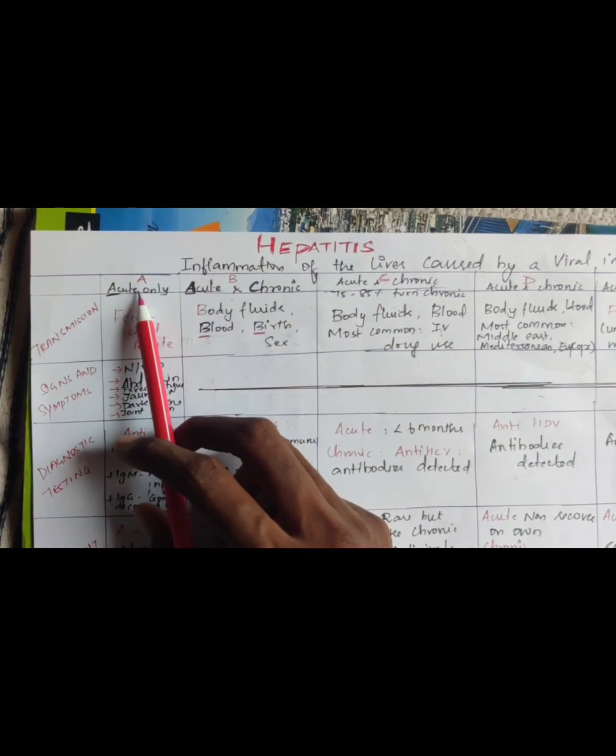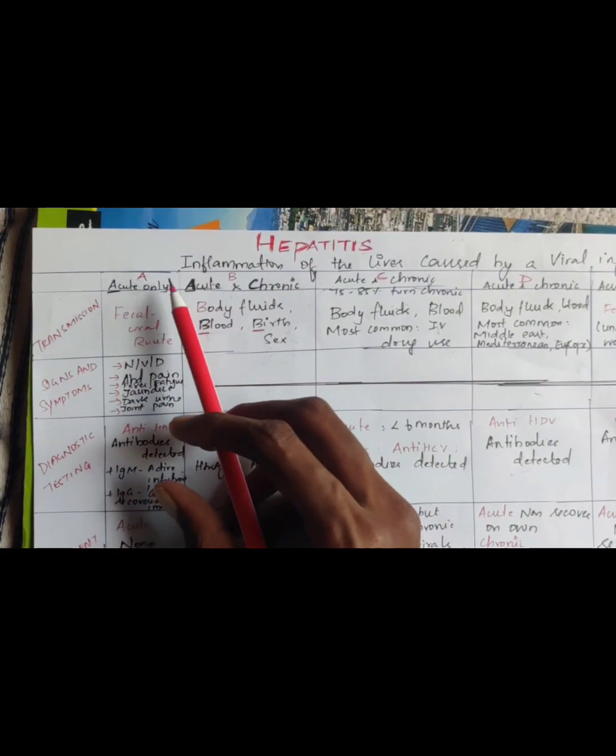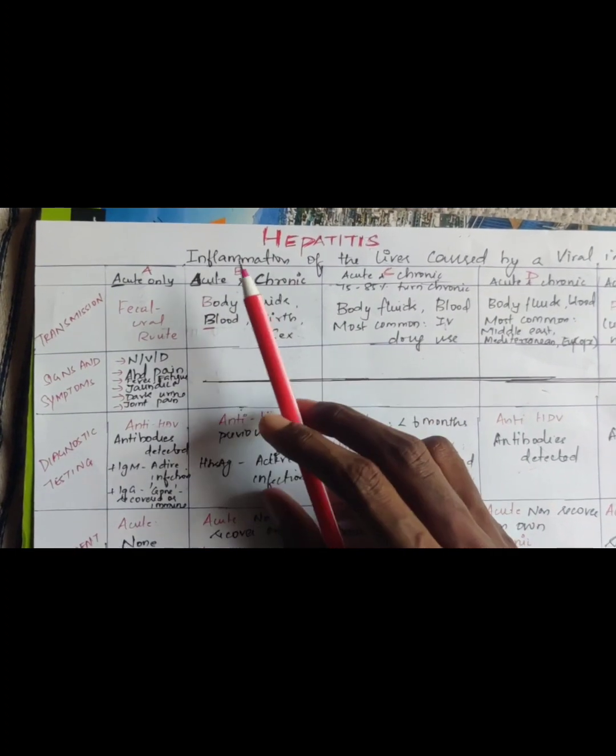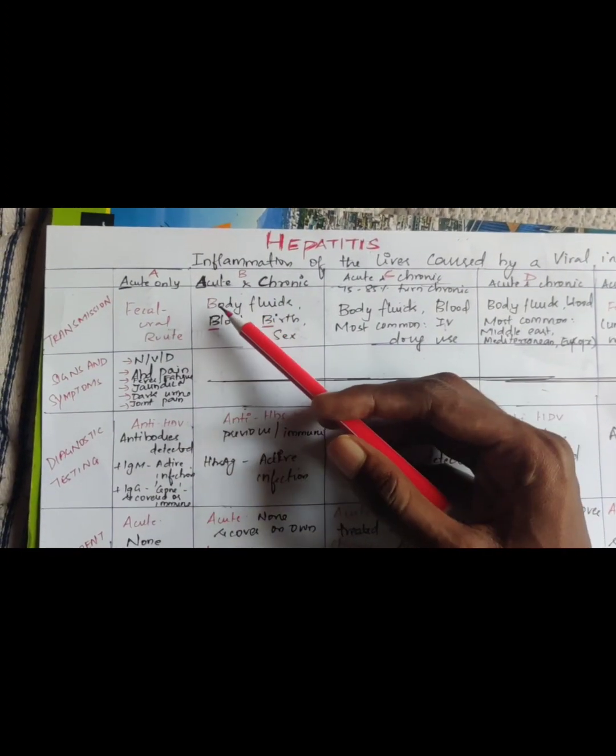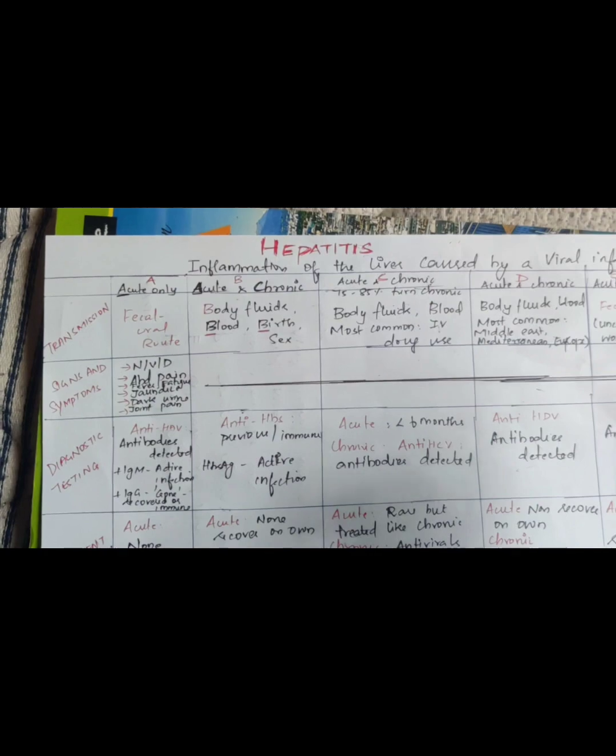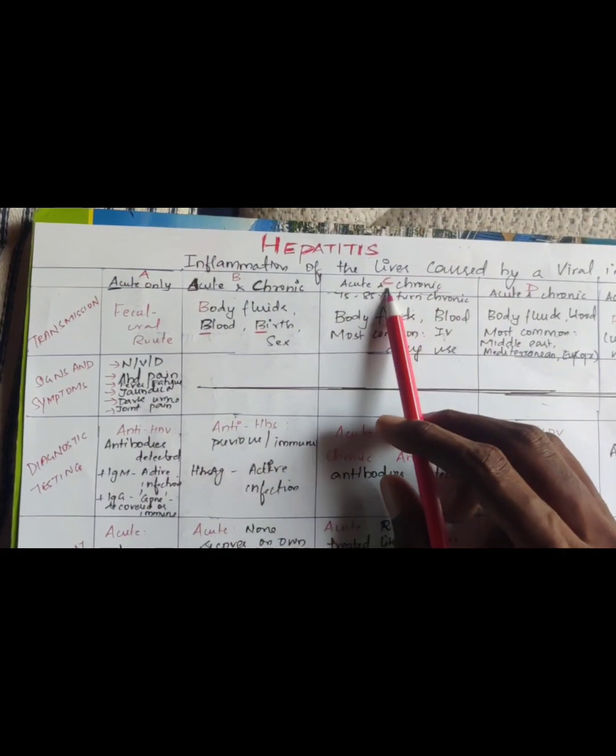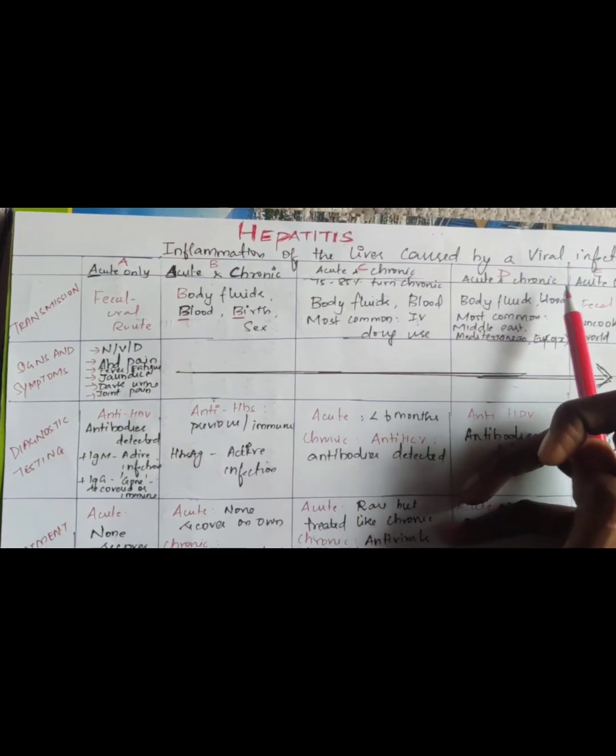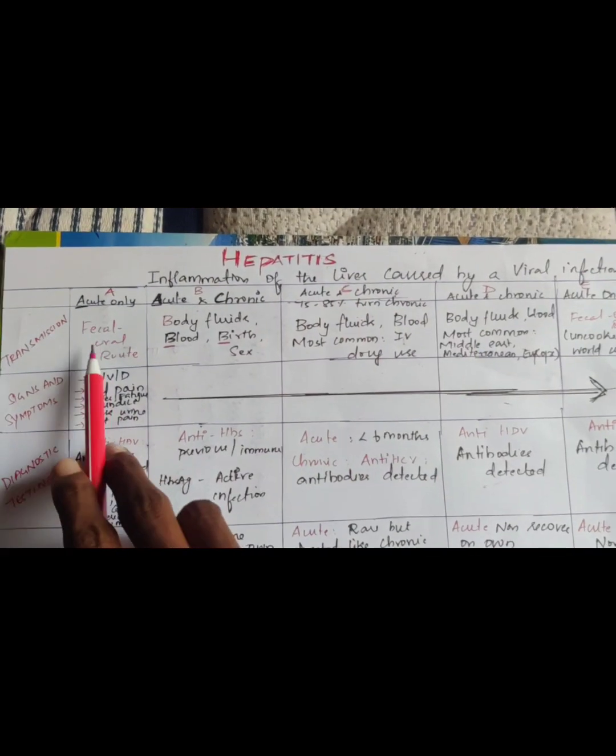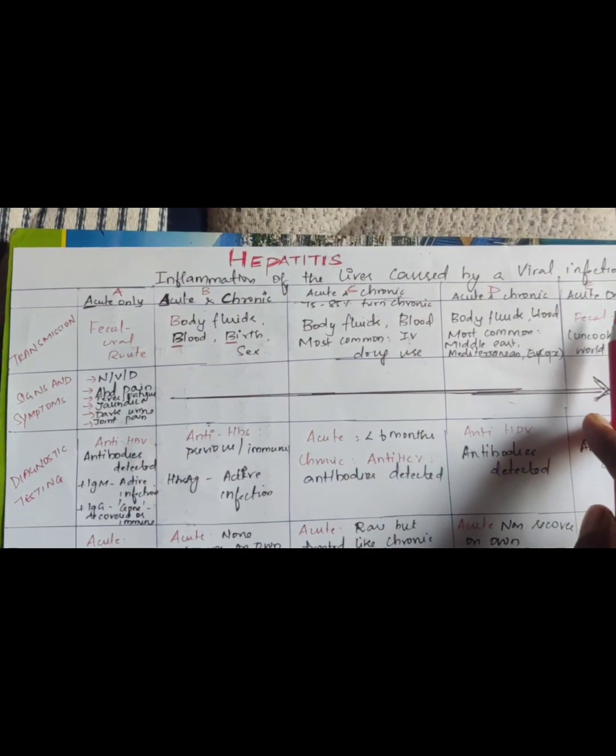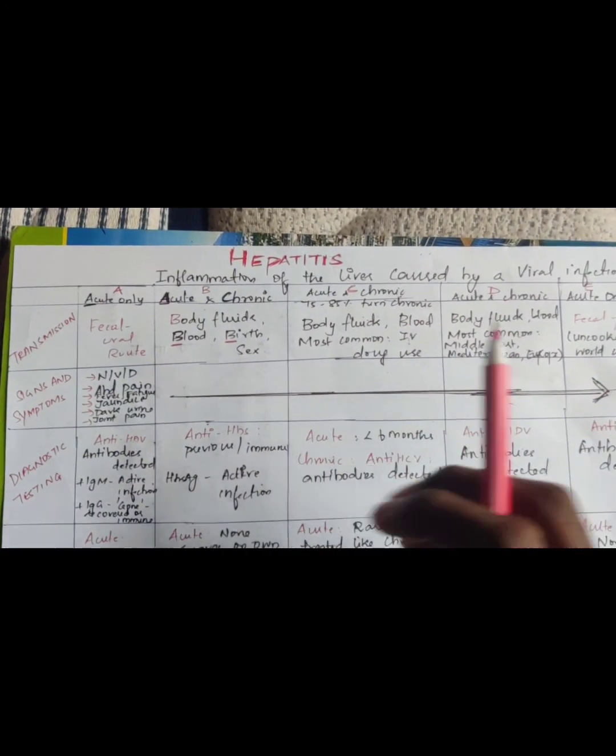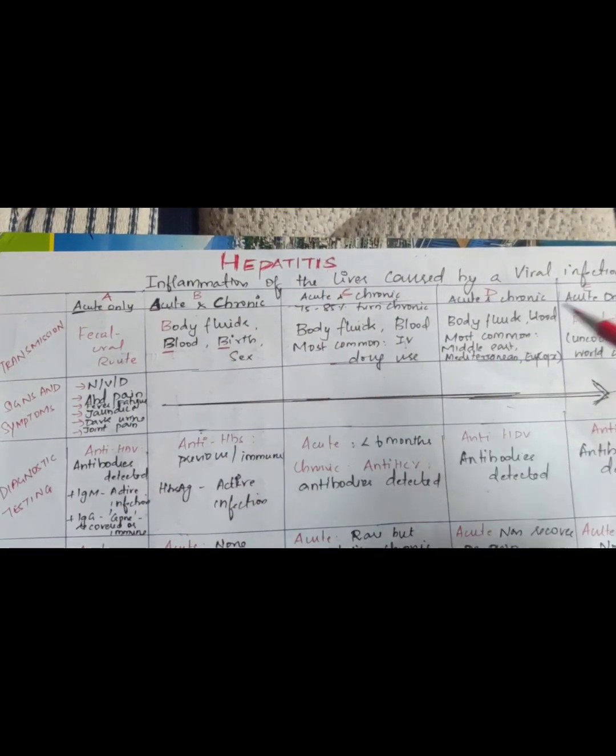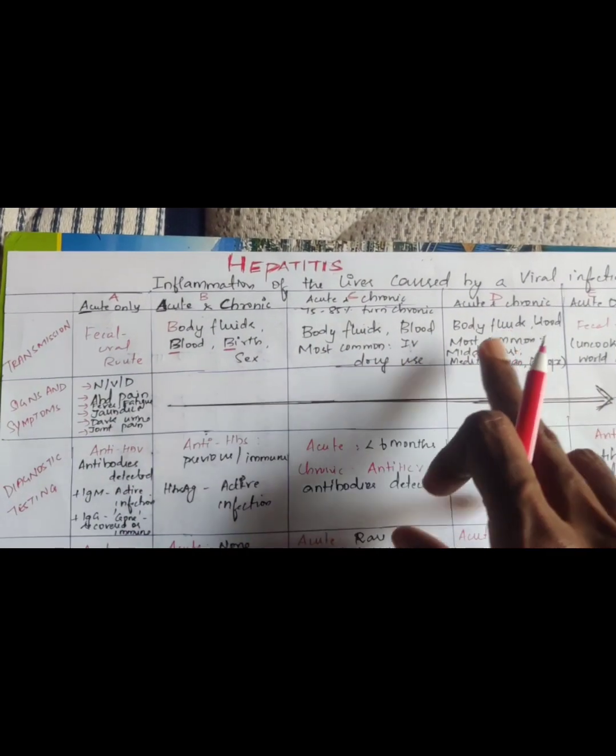So hepatitis A is acute and it is not chronic. Hepatitis B is acute and chronic. We can easily treat acute, but in case it is chronic, it will be mentioned. C is acute and chronic, D is acute and chronic, and E is acute only. Hepatitis A and E are both similar, acute only. And B and D are similar.